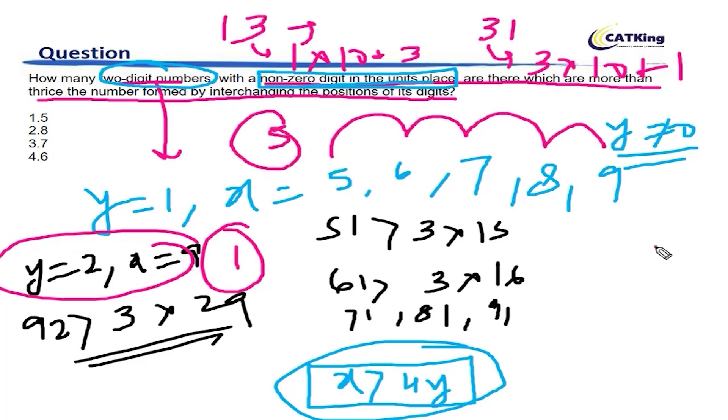So how many solutions in total? There are 6. So there are 6 two-digit numbers with non-zero digit in the unit place which actually becomes more than 3 times the number formed by interchanging the position of the digits.